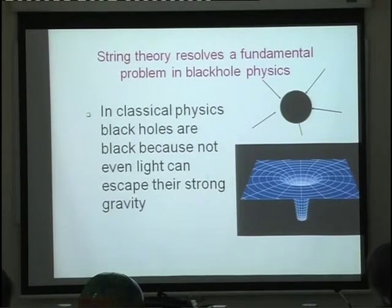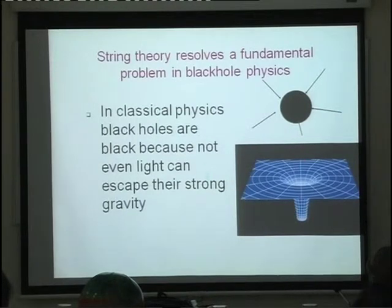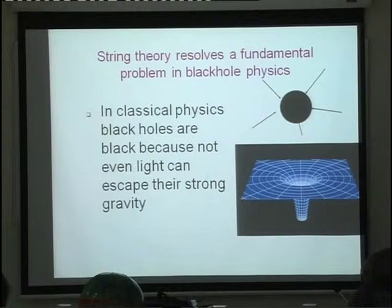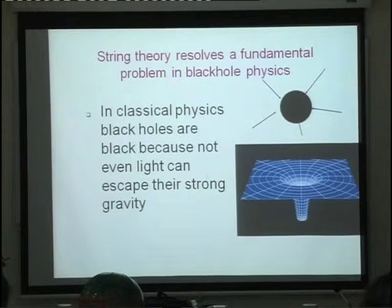A black hole is a solution of general relativity — it comes out of the equations, and the metric looks something like this. The most important feature is that if you go in, you can't come out. If you light a torch inside, that light can never come out — so it looks black, that's why it's called a black hole. This name was coined by John Wheeler.